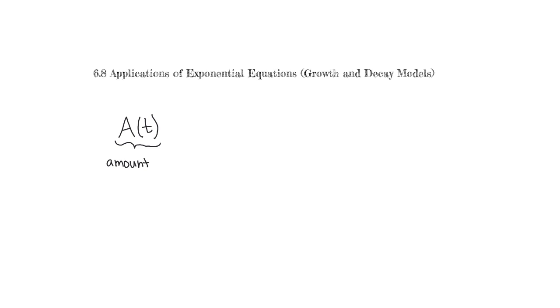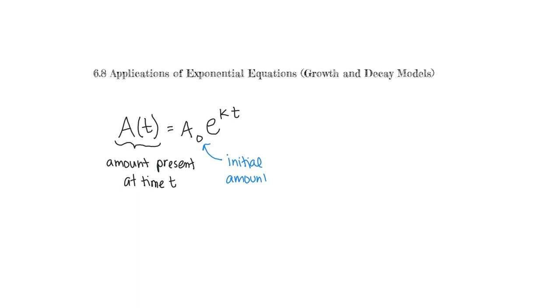The first thing you have to know in order to do a growth or decay model is the basic function. Our function is called A, and it is a function of the variable T, which represents time. A represents the amount of whatever substance, thing, or person is present at time T. A naught represents the initial amount present — when time is zero, the initial amount present is whatever this number is in the front of the function.